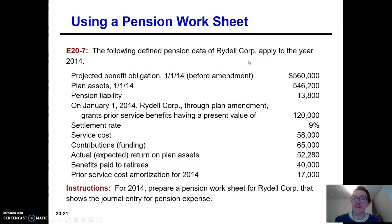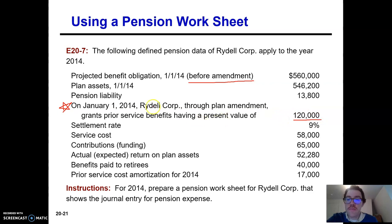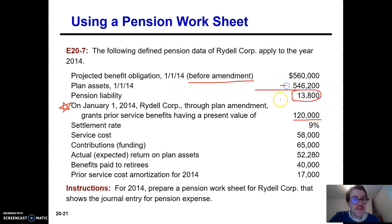Let's look at Rydell Corporation. Here's their projected benefit obligation before their plan amendment. On January 1st, Rydell Corporation through their plan amendment grants prior service benefits having a present value of $120,000. They also give you all the information you're going to need — the plan assets, the pension liability, though you don't really need that since you can figure that out by doing the PBO minus the plan assets.